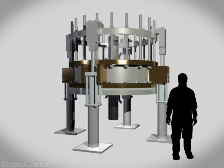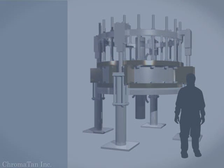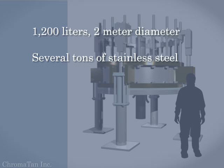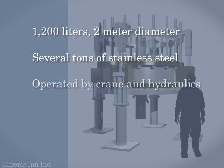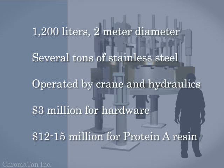This type of column must be at least 2 meters in diameter and be able to pack 1,200 liters of resin. Several tons of stainless steel are used to construct this type of column, cranes must be used to move the system components, and special hydraulic systems are installed for packing and unpacking the resin. Overall, a commercial column chromatography operation of this magnitude requires $3 million for capital, and $12 to $15 million for the expensive protein A resin.